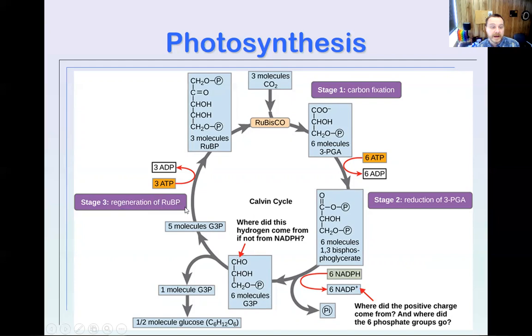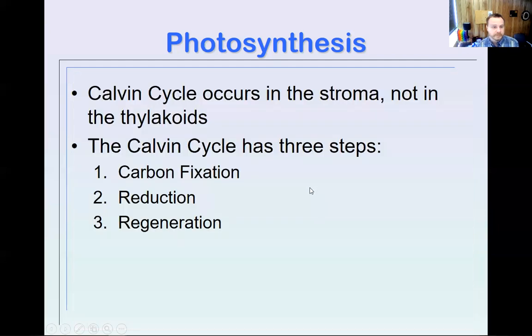They get turned back into this ribulose compound through the rest of the cycle. Okay, so again, the Calvin cycle has a couple key features. The Calvin cycle occurs in the stroma. It does not occur inside the thylakoid, whereas the light reactions occur on and within the thylakoid. The Calvin cycle occurs within the chloroplast but outside the thylakoid, in the stroma, the space between the thylakoids.